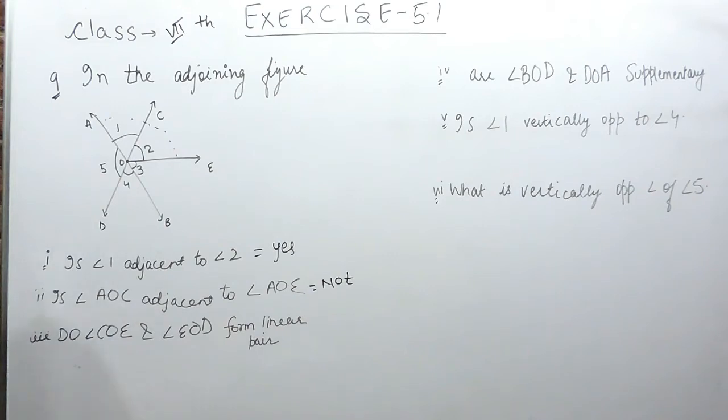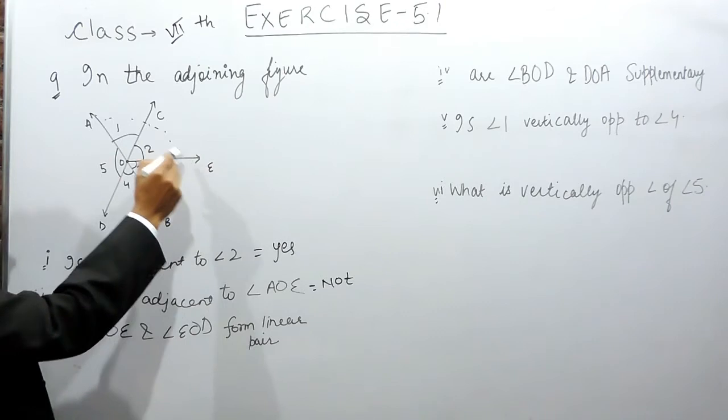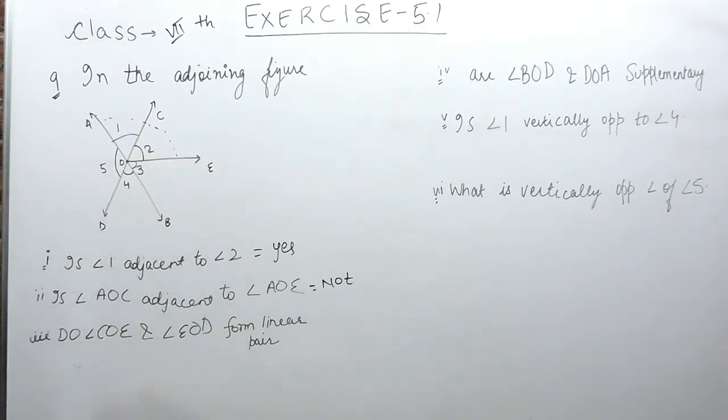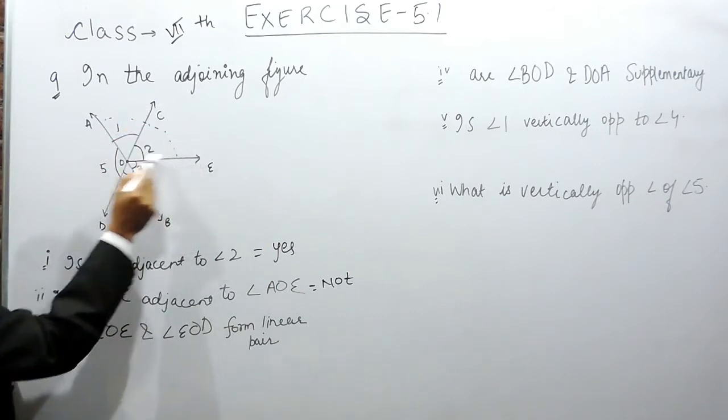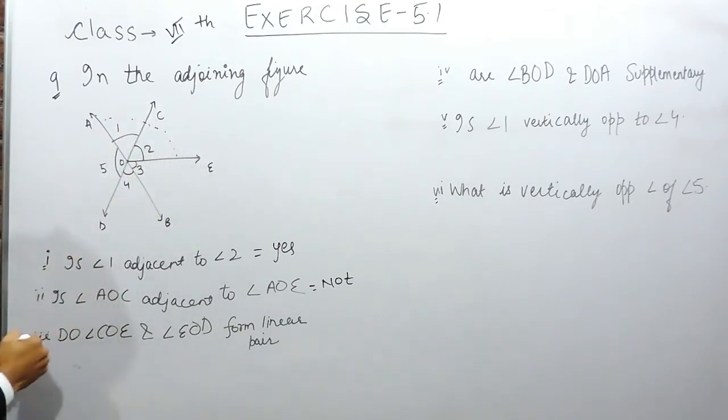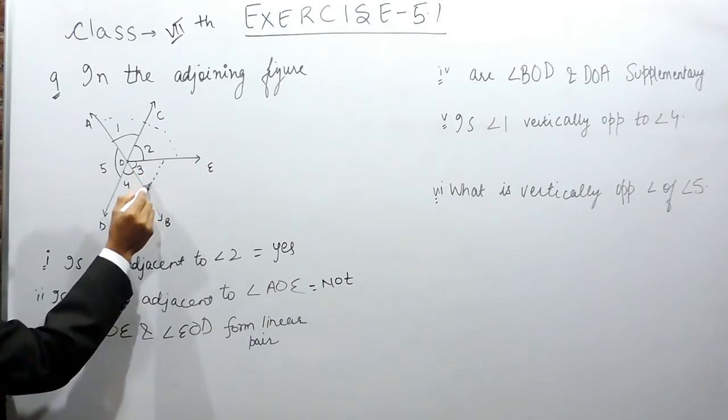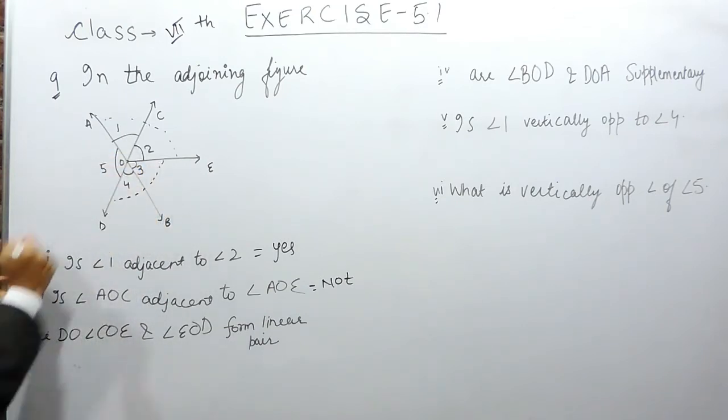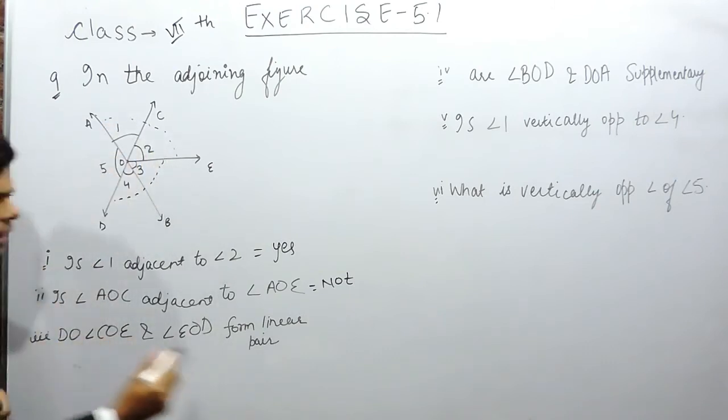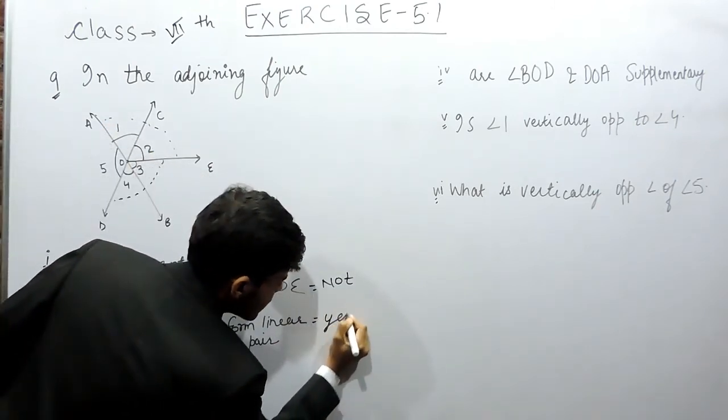In the third part it says that angle COE and AOE form linear pair. So yes, because you can see that COE and EOD, these two angles lie on a straight line. EOD is this angle, COE is angle 2. So these two lie on a straight line, that's why they are linear pair.